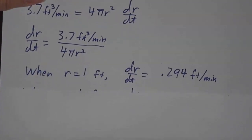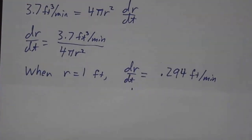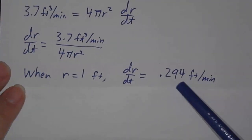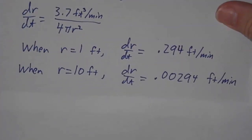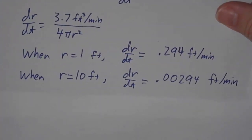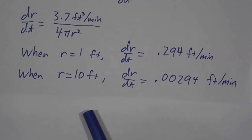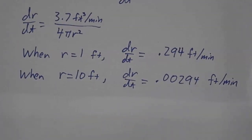So for example, when r is 1 foot, then r is growing at a rate of 0.294 feet per minute. But when r is 10 feet, we're talking about a big balloon here, maybe it's a weather balloon or something. When r is 10 feet, dr/dt is 0.00294 feet per minute.